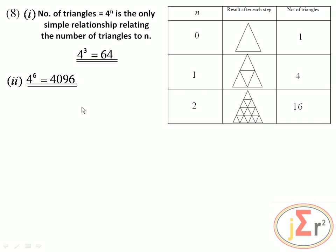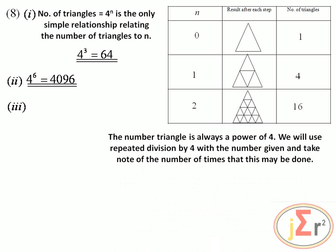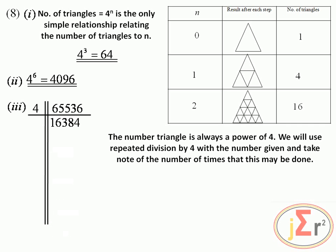A shape has 65,536 triangles and we need to determine the value of n. The number of triangles is always a power of 4, so we use repeated division by 4 and count how many times it can be done. Dividing 65,536 by 4 gives 16,384; dividing again gives 4096. We recognize 4096 as 4 to the power of 6, and since we've already divided twice, we know n should be 8.